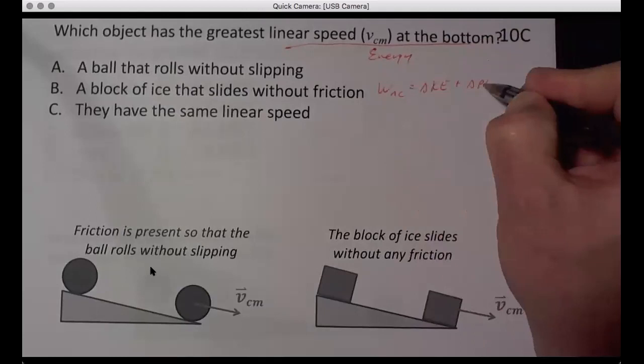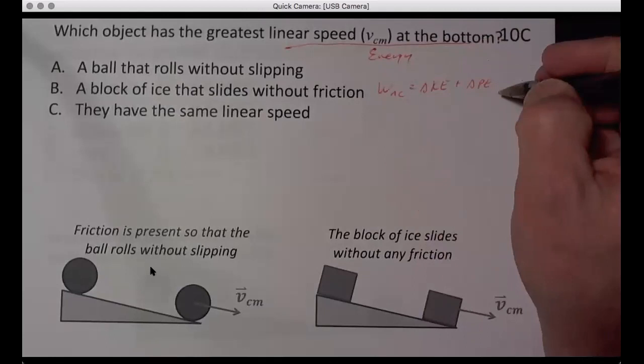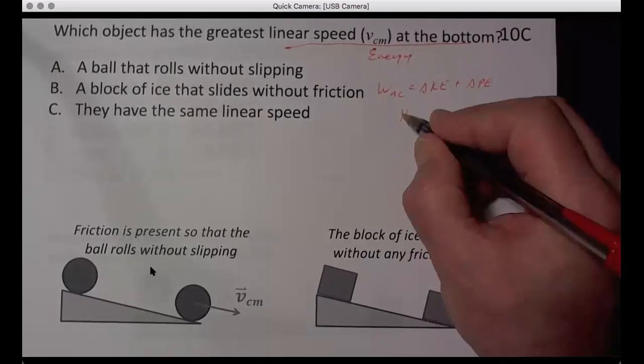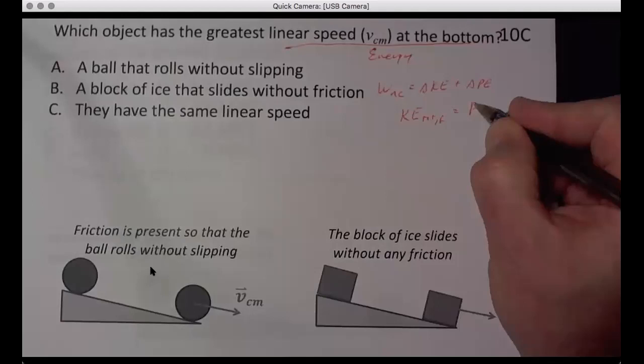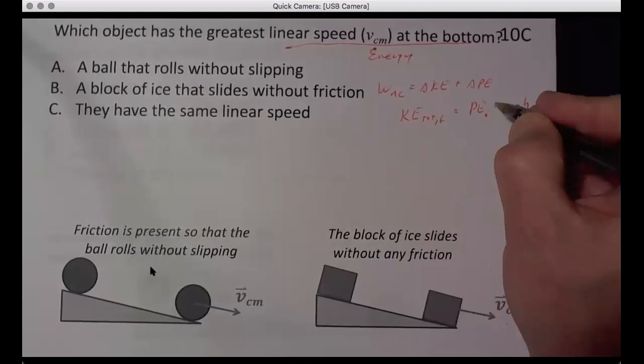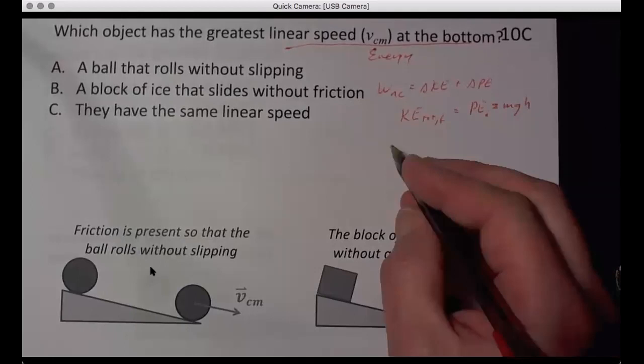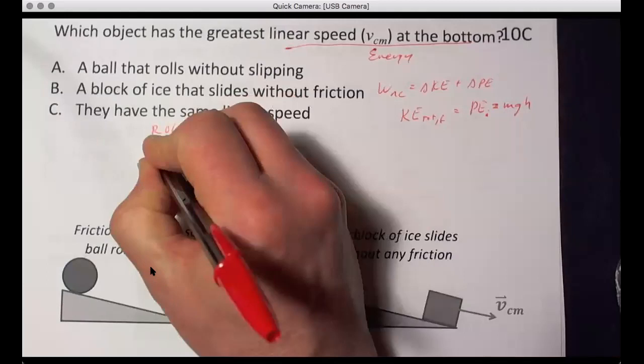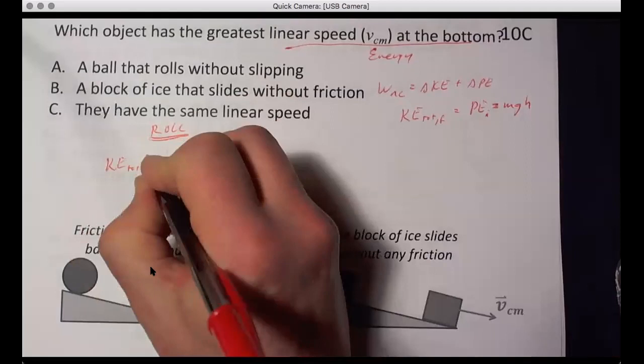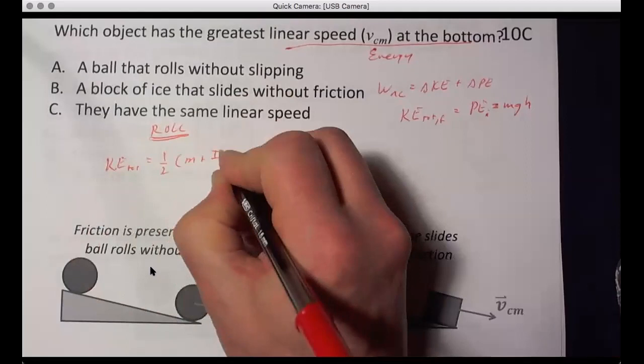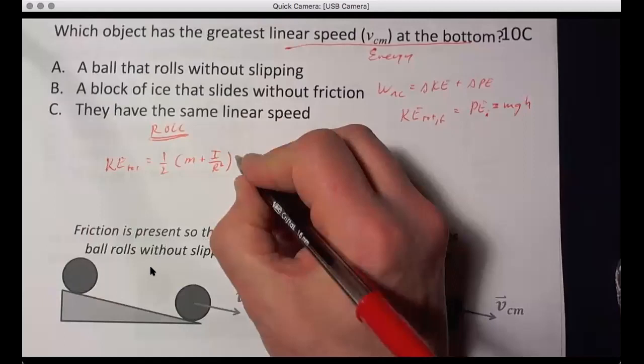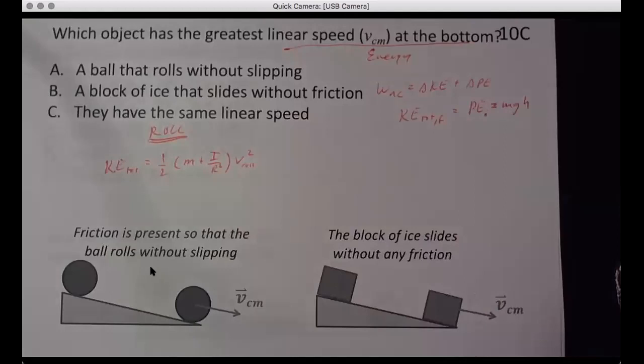And we can look at the same analysis that we did before. So KE total final equals PE initial, which is MGH. And that's going to equal, in this case the rolling case, it is K total. And then we did the derivation of this before. It's one half M plus I over R squared. That's from the translation, that's from the rotation, of the V rolling squared. And so this is translation, and that's rotation.